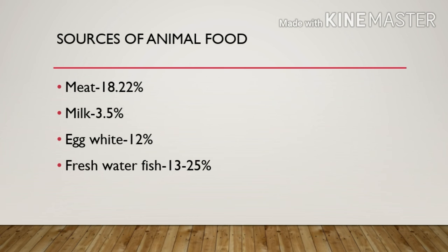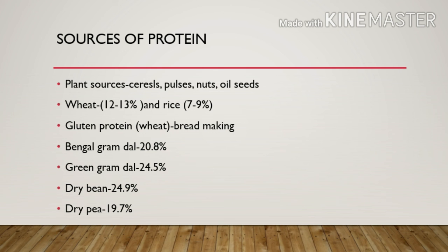The protein percentages in animal foods: meat contains around 18.9%, milk contains 3.5%, and freshwater fish contains between 13% and 25% protein.